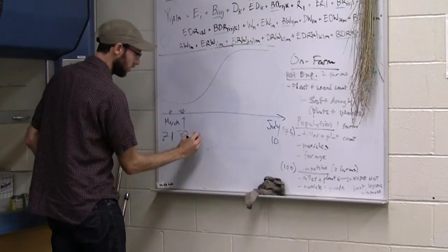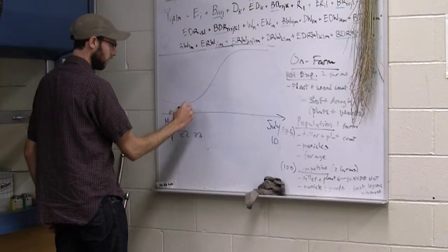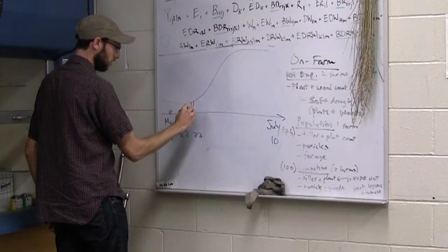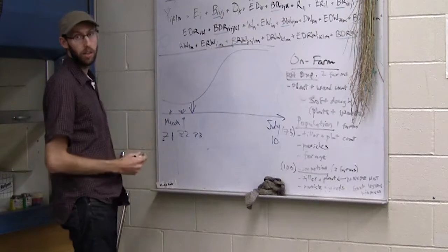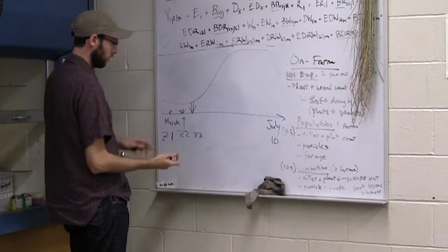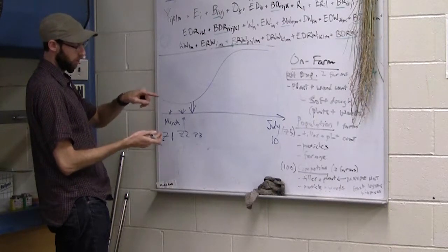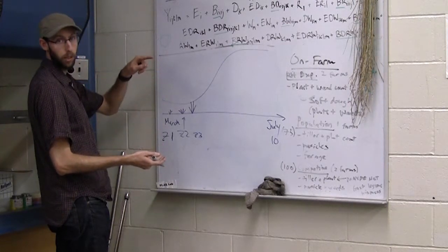As we move on to Z3, what we have here is what's called stem elongation. At that point, what's happening is that the plants have put on different nodes, and they're starting to stretch out and get bigger and bigger and bigger.